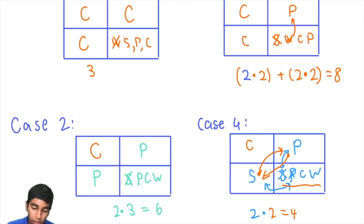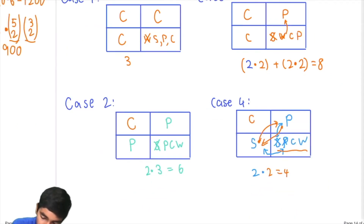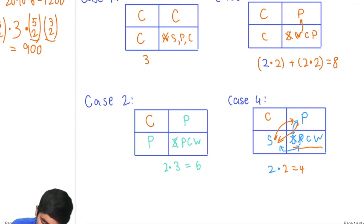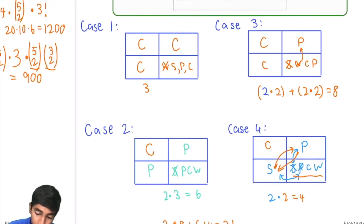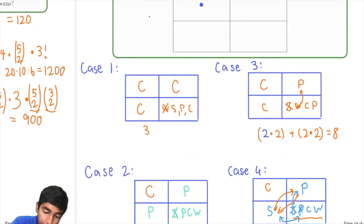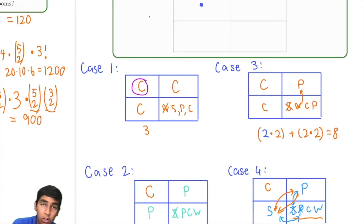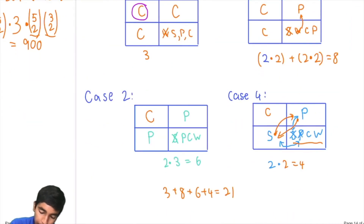Adding all cases: 3 + 8 + 6 + 4 = 21. Remembering we assumed corn was in the top-left square and multiply by four for all four possible crops: 21 × 4 = 84.